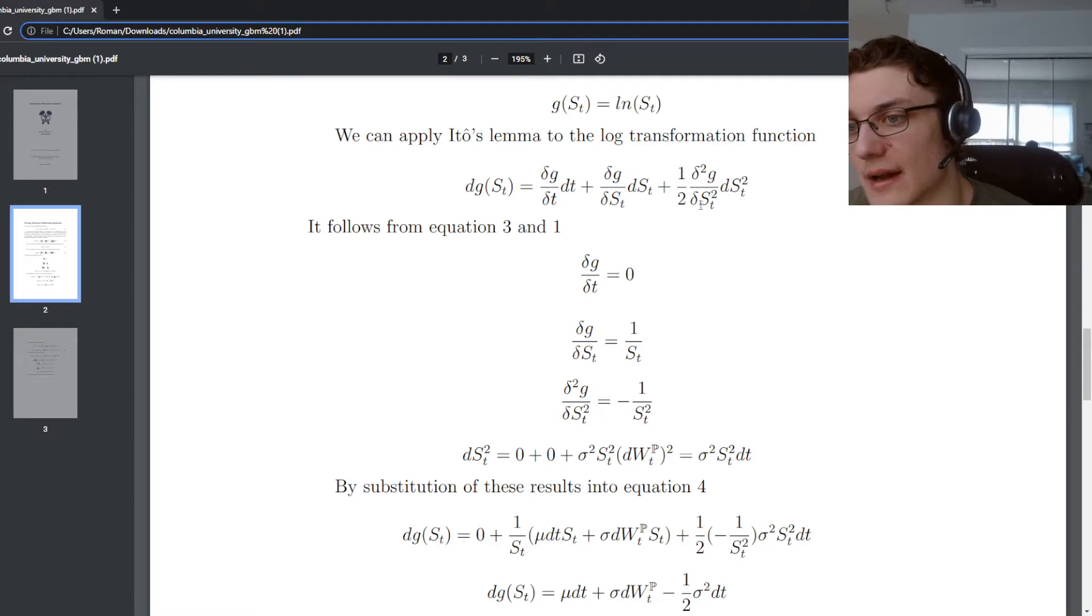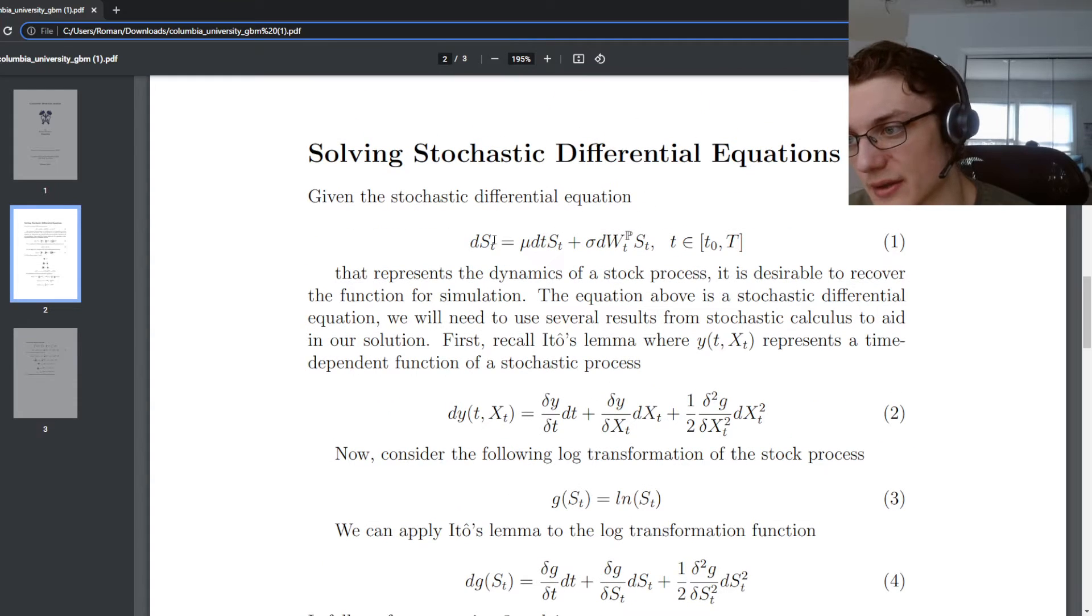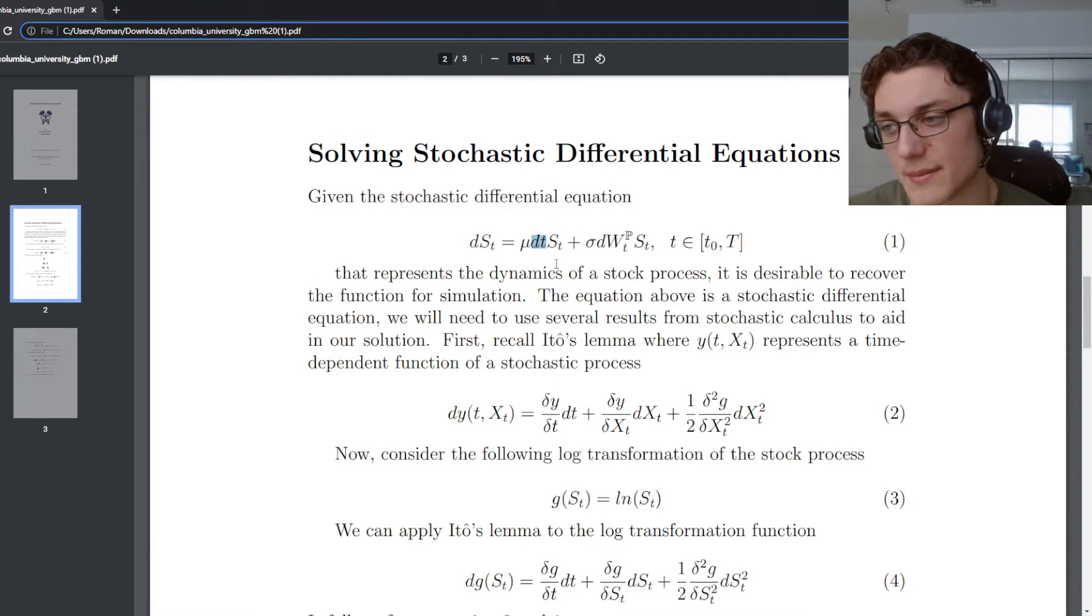So now we need to find this dS of t squared term. Fortunately, we know it follows geometric Brownian motion. And this is the stochastic differential equation that we're trying to solve. This is where things start to get a little confusing if you're unfamiliar with stochastic calculus. In stochastic calculus, if you have dt squared, that's going to be equivalent to zero. It's going to converge very quickly to zero. If you have dW_t squared, that's actually going to be equal to dt. And if you have a product of dW_t and dt, that's going to be equal to zero.